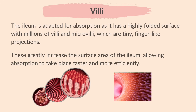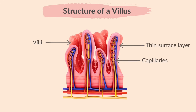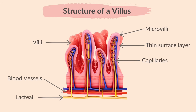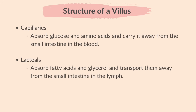These greatly increase the surface area of the ileum, allowing absorption to take place faster and more efficiently. These finger-like projections are called villi, which is the plural of villus. A villus contains capillaries, a thin surface layer with microvilli on top, blood vessels, and lacteals. Capillaries absorb glucose and amino acids and carry them away from the small intestine in the blood. Lacteals absorb fatty acids and glycerol and transport them away from the small intestine in the lymph.